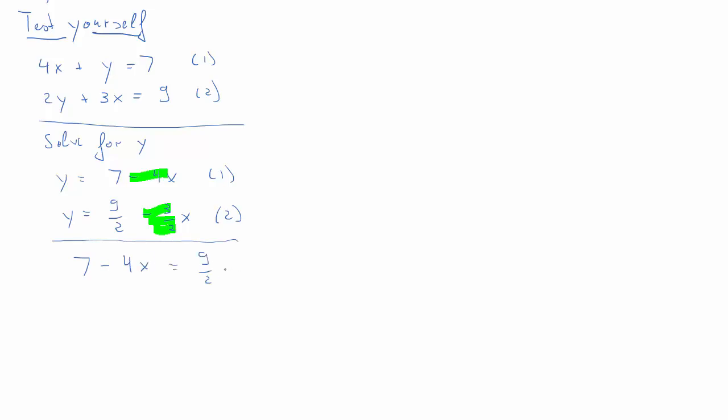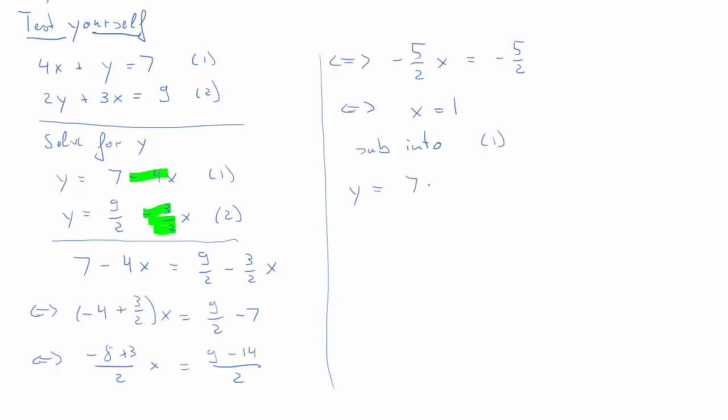We'll set both equations equal. We bring all the terms with x to the left hand side, all constants to the right hand side. So here we have negative 8 plus 3 over 2 x equals 9 minus 14 over 2. That means we have negative 5 over 2 x on the left hand side and negative 5 over 2 on the right hand side, so conveniently x equals 1. We substitute this into equation 1, so we get y equals 7 minus 4 which is 3. So the solution is x equals 1 and y equals 3.